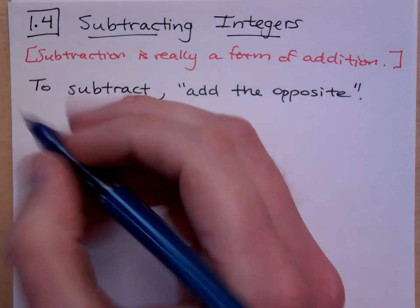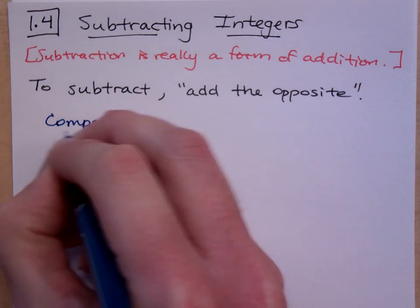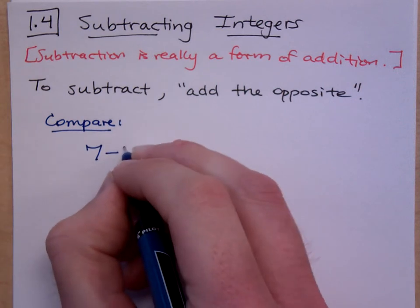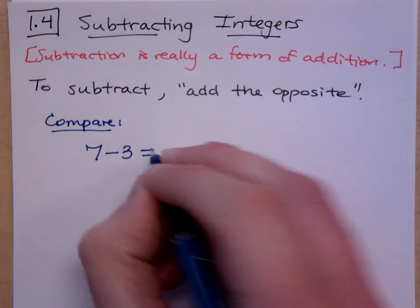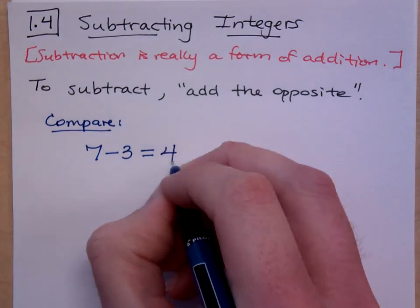Now, what I want us to do is I want us to compare the following so you can see that what I'm saying here is not just a bunch of fluff. It's not magic. If I say 7 minus 3, it's child's play. 7 minus 3 is what? 4.